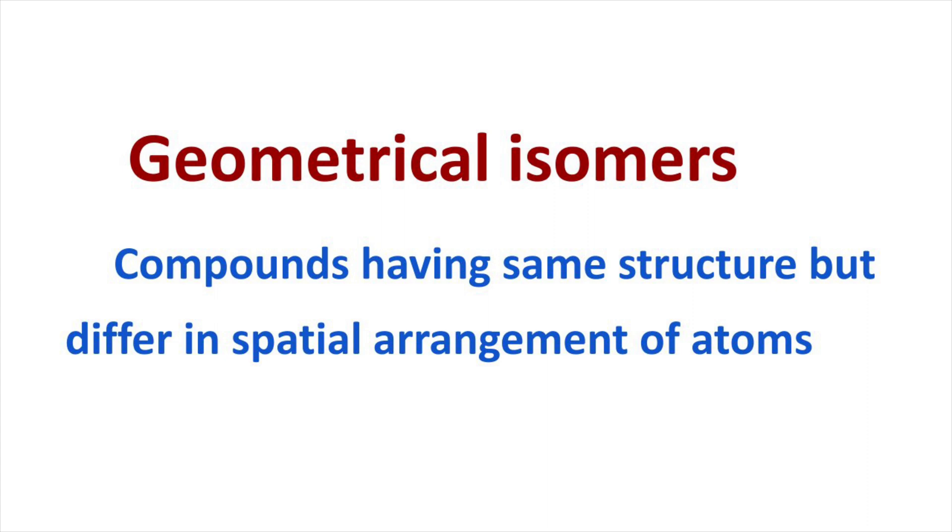Geometrical isomerism is a type of stereoisomerism in which compounds have same structure but they differ in their configuration. That means the position of atoms and molecules in space is different.